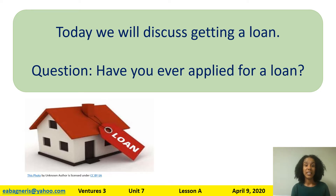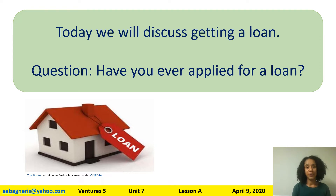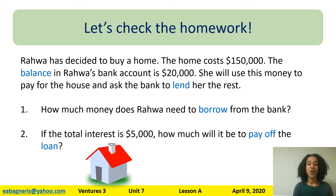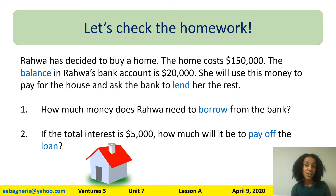If you apply for a loan, you will probably have to pay interest — that is money you pay in addition to the amount you borrowed. Today we are going to talk about getting a home loan specifically. Let's begin by checking the homework. Rawa has decided to buy a home. The home costs $150,000. The balance in Rawa's bank account is $20,000. She will use this money to pay for the house and ask the bank to lend her the rest.